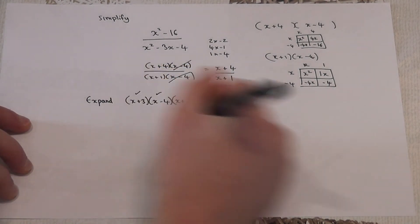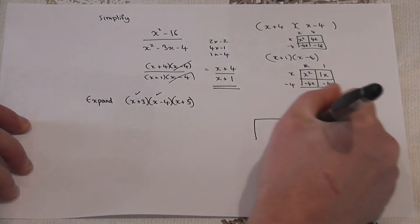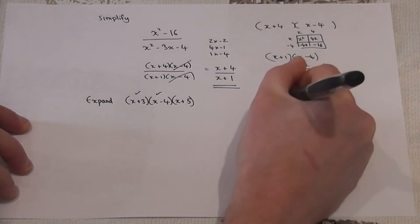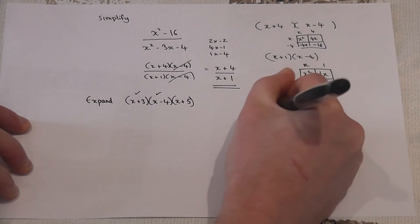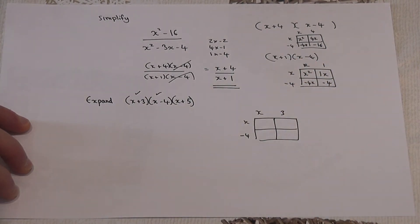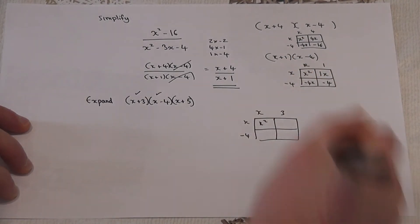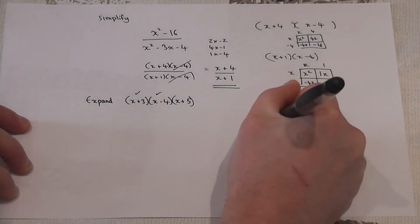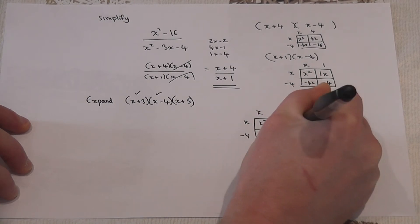So I'm going to work out what x plus 3 and x minus 4 is. I get x squared, I get a 3x, a minus 4x, and a minus 12.